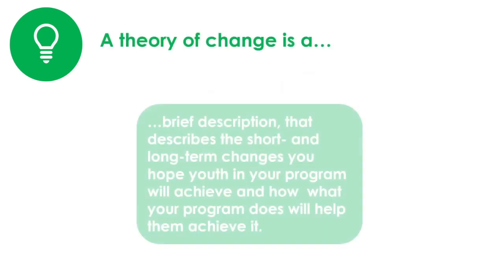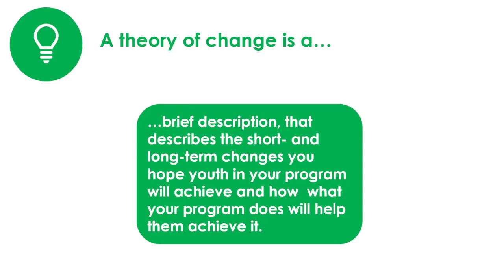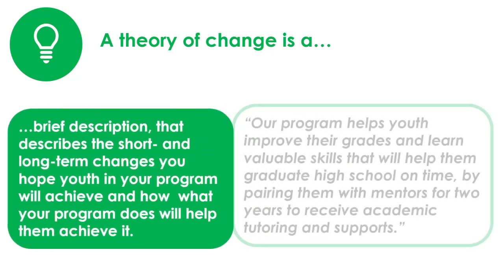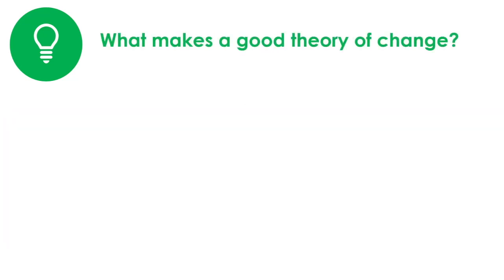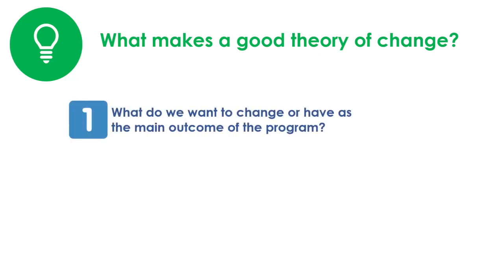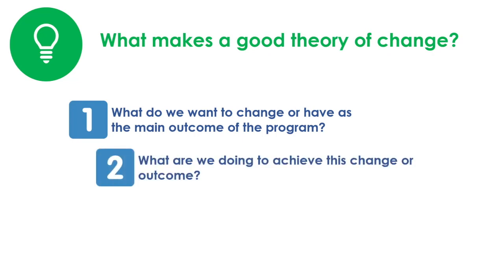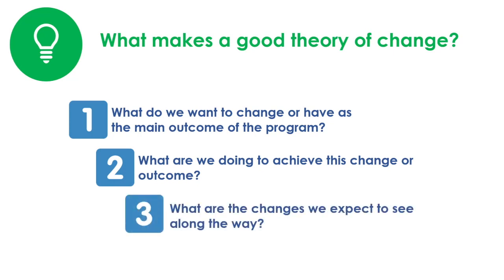A theory of change is a brief description, usually just a sentence or two, that describes the short and long-term changes you hope youth in your program will achieve and how what your program does will help them achieve it. For example, when describing a mentoring and tutoring program, you might say: 'Our program helps youth improve their grades and learn valuable skills that will help them graduate high school on time by pairing them with mentors for two years to receive academic tutoring and supports.' A good theory of change answers three questions: One, what do we want to change or have as the main outcome of the program? Two, what are we doing to achieve this change or outcome? Three, what are the changes we expect to see along the way?